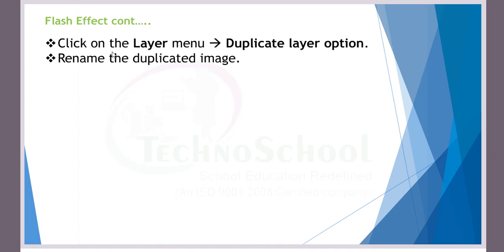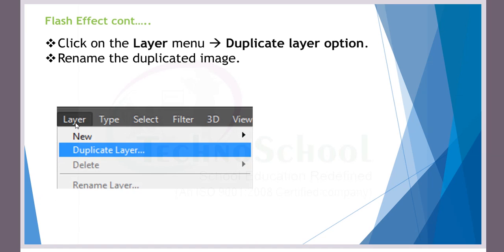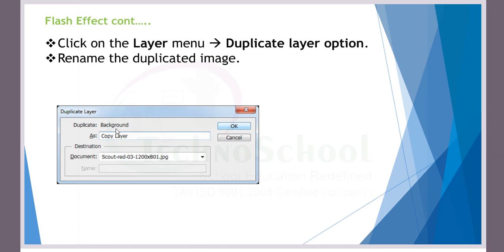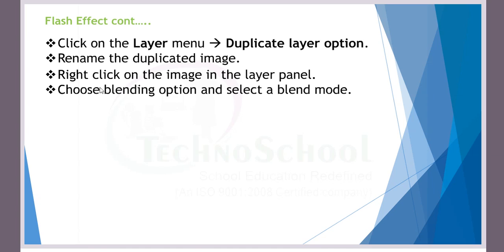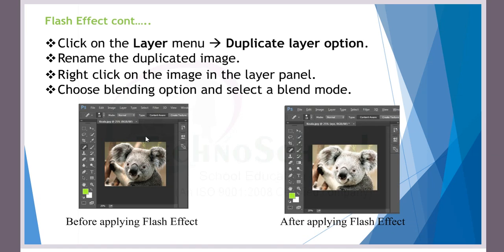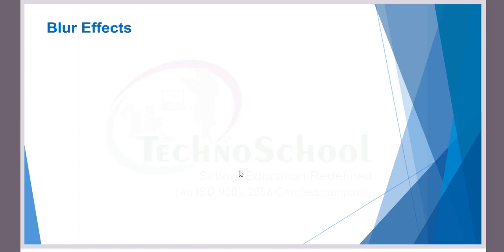To apply the flash effect, go to the Layer menu in the menu bar and click the Duplicate Layer option, then rename the duplicate layer. After that, right-click the layer in the layer panel and choose Blending Options to select the blend mode. Before applying the flash effect the picture looks slightly dark, and after applying it, the picture is noticeably brighter. That is the difference before and after the flash effect.